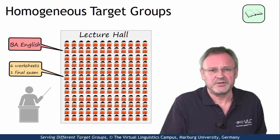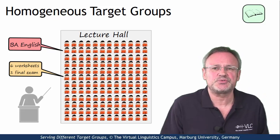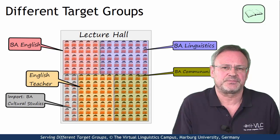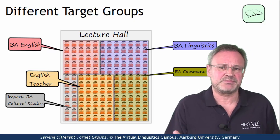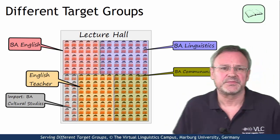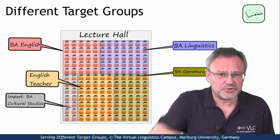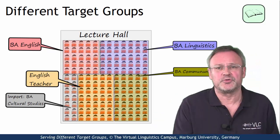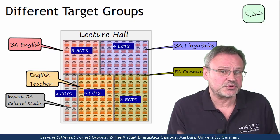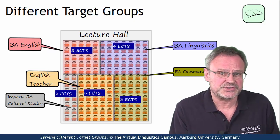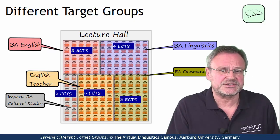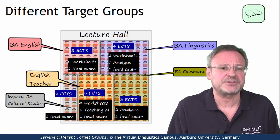Instead, we find courses where the students are part of different degree programmes. And unlike in my schematic representation here, they are normally scattered all over the room. They will eventually receive different numbers of credit points, and to be awarded these different credits, they have to submit different tasks.